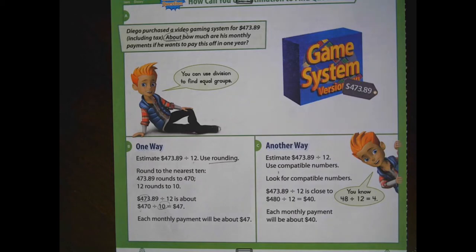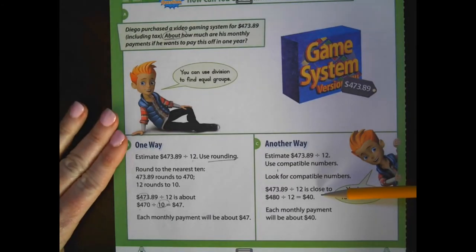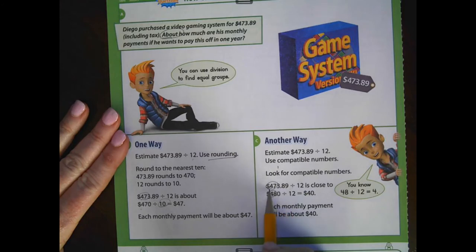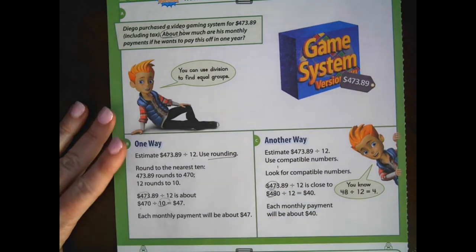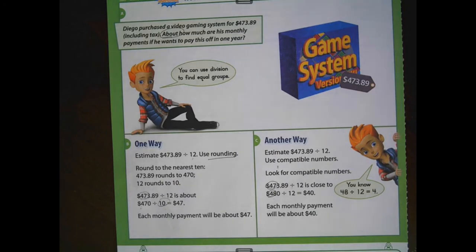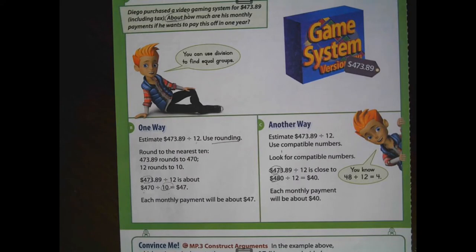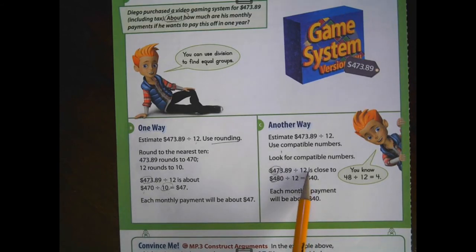If we use compatible numbers, we are going to leave 12, 12. We know that 12 times 4 is 48. So why don't we change this 47 to 48? We would make this whole number 480 divided by 12 to get an estimate of 40. Basically we're not even worried about the decimal part of our numbers here. We are looking at the whole number part in order to help us estimate.